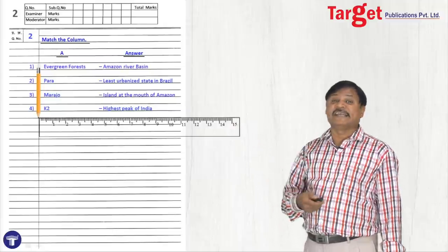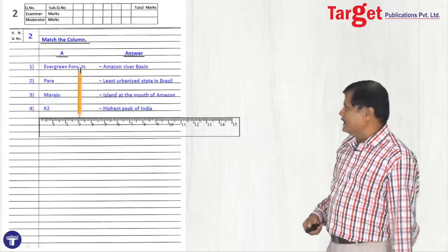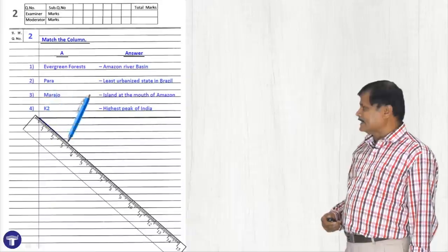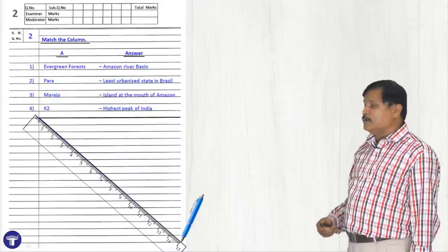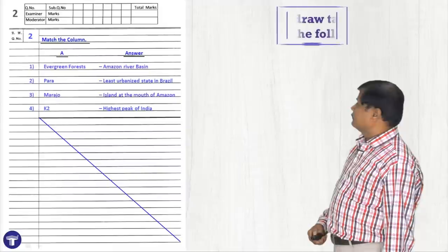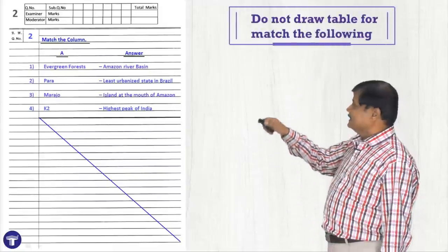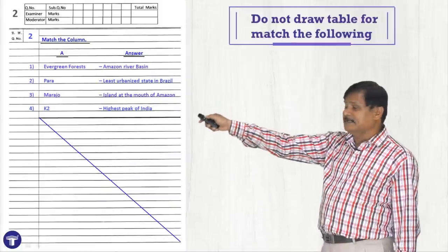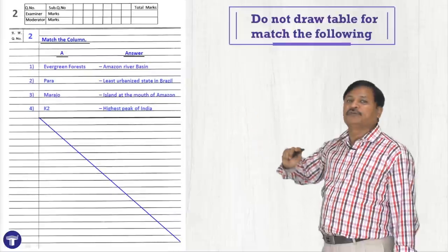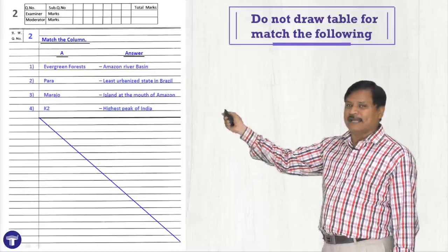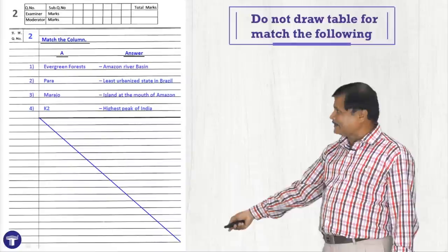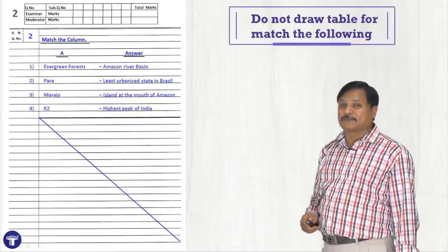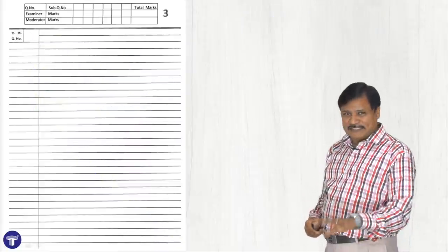Second: do not make a table for match the following. You cannot make a table for it. Once it is over, please draw a line, then cancel the space with blue pen. Do not make any table — some students write question, answer, and options also in a table. You should not write options; only question and answers. I have written the main question number in the box and cancelled the unused space and page.